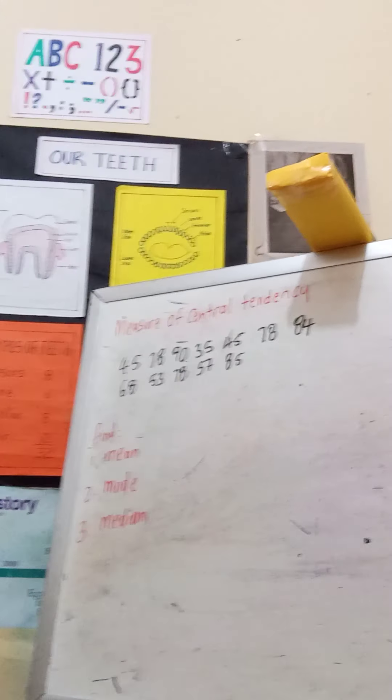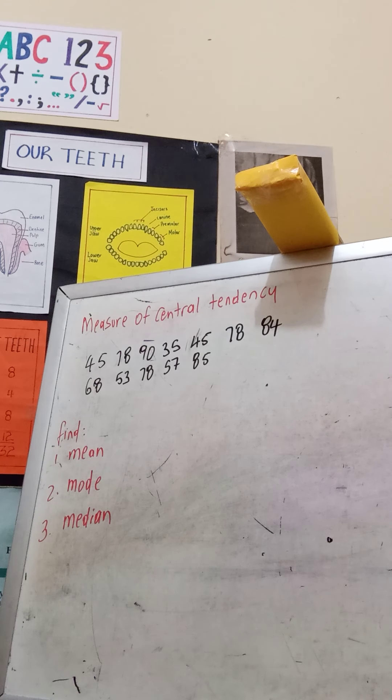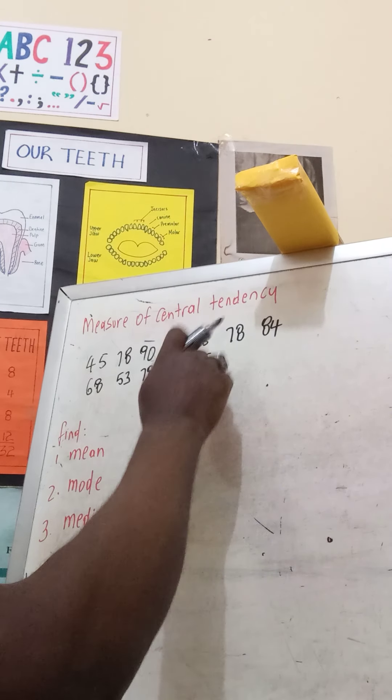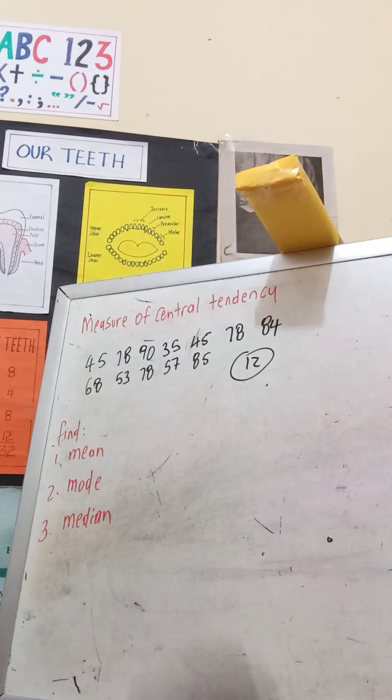With the measure of central tendency, the teacher has given the test and collected the scores. She now wants to find the mean score of the class, the mode score, or the median score. Here we're bringing math into our lesson. Let's jump at this exercise. You're given the raw data - 12 numbers: 45, 68, 90, 35, 68, 78, 84, 85.